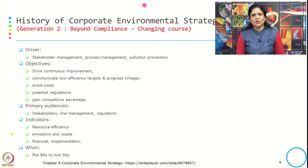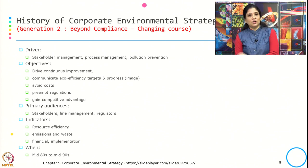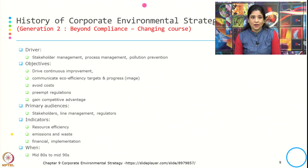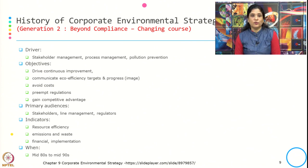Generation Two is beyond compliance and is known as 'changing course.' The drivers for this generation are stakeholder management, process management, and pollution prevention. The objective was to drive continuous improvement, communicate eco-efficiency targets and progress, avoid cost, preempt regulation, and gain competitive advantage. The primary audience shifted to stakeholders, line management, and regulators. Indicators included resource efficiency, emission waste, financial, and implementation metrics. The time period for Generation Two is mid-1980s to mid-1990s.